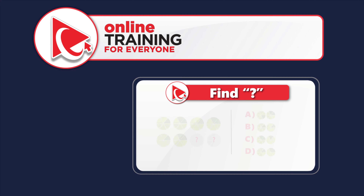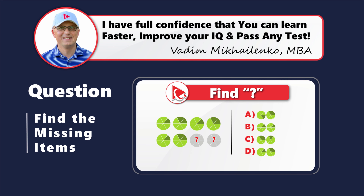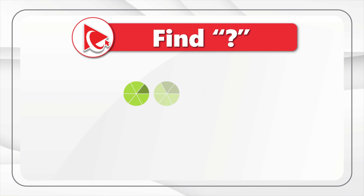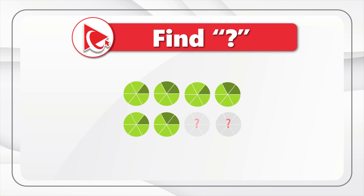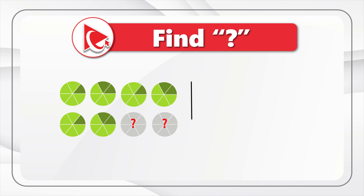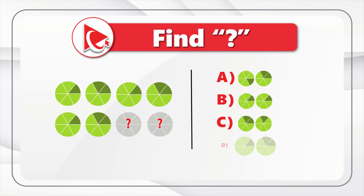This is one of my favorite questions just because it's so unusual, but the answer is very simple. You're presented with a set of eight circles. Six of the circles are visible and you need to select two missing ones. You have four different choices to find the missing circles — choices A, B, C, and D. Take a close look to see if you can come up with the solution.